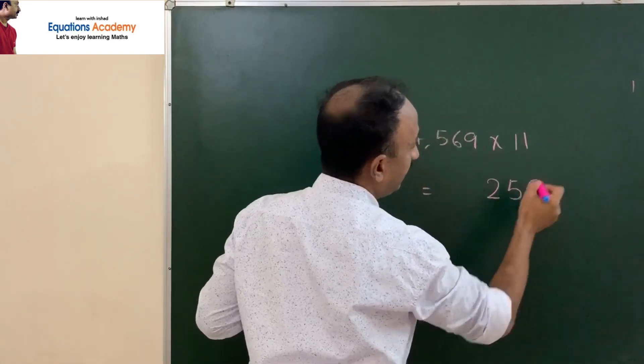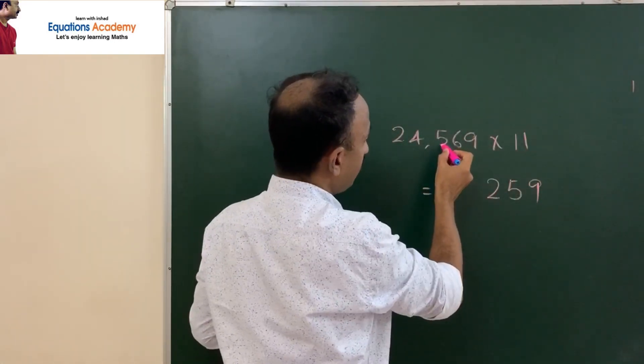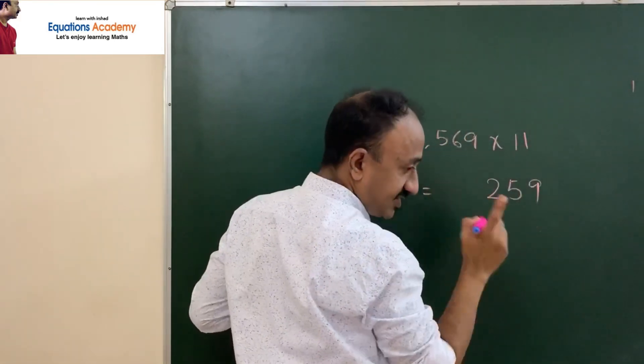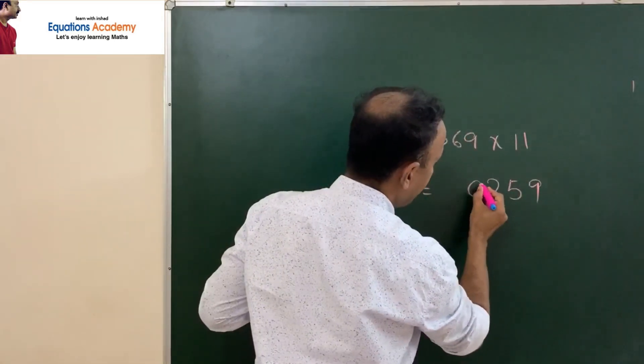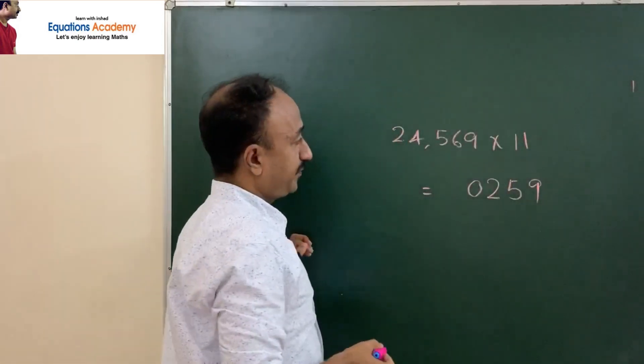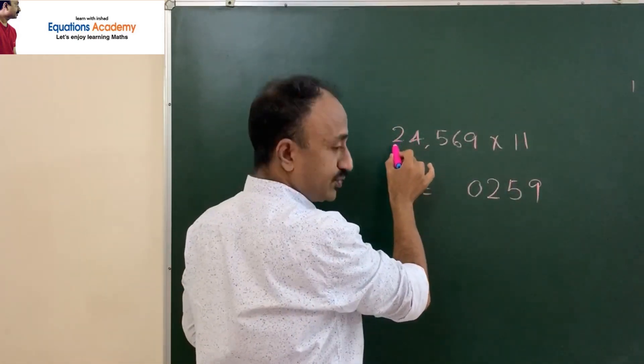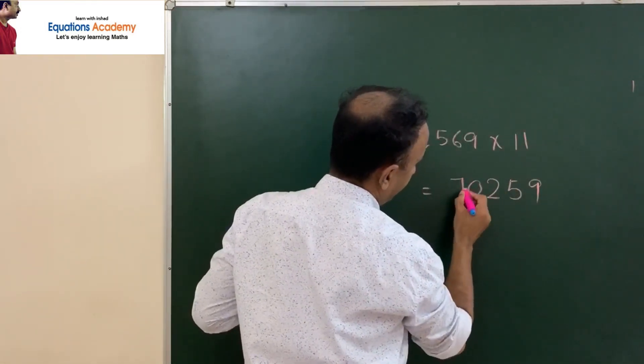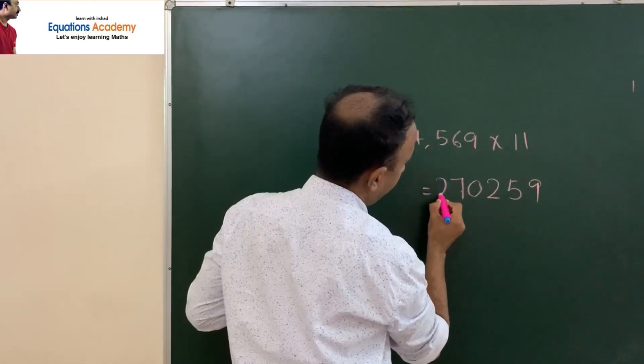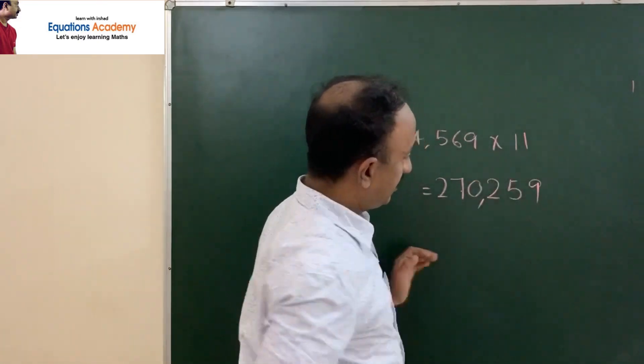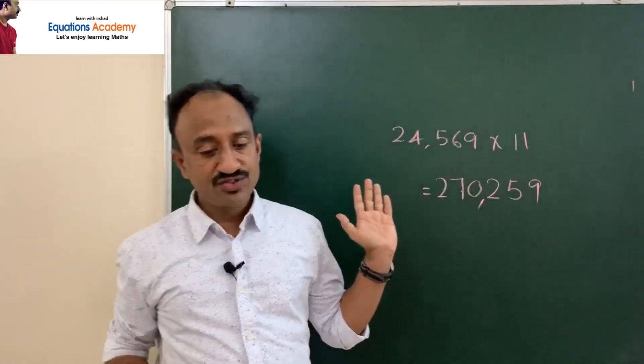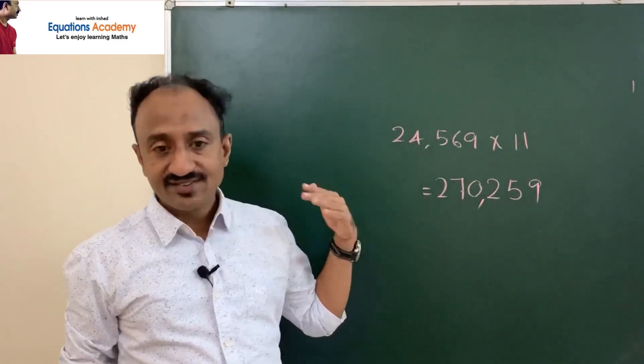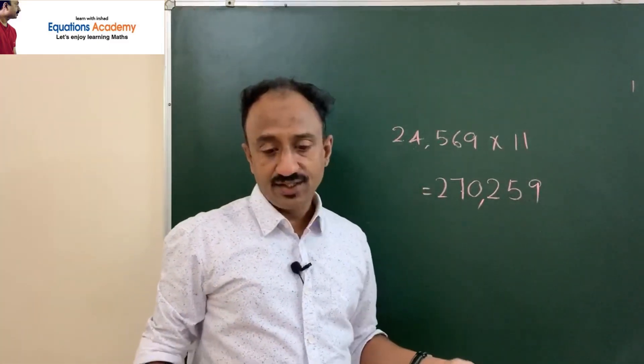5 plus 4 is 9. 9 plus 1 is 10. We put 0 there, 1 carry forward. Again, 4 plus 2 is 6, plus carry forward 1 is 7. Then last, we put 2 as it is. So this is 270,259 or 2,70,259.